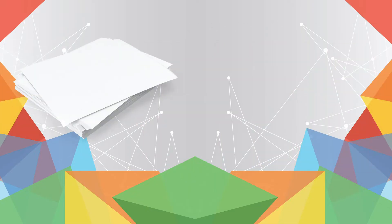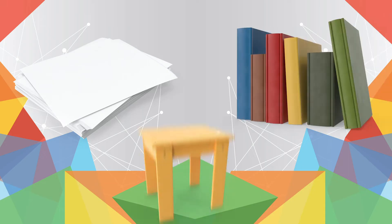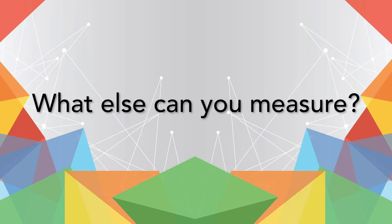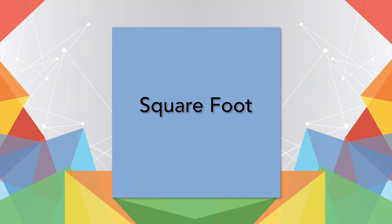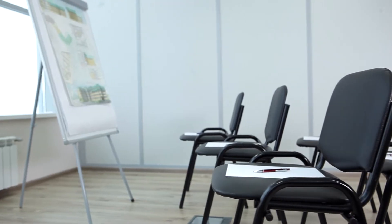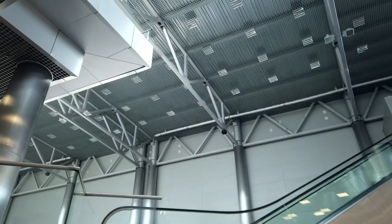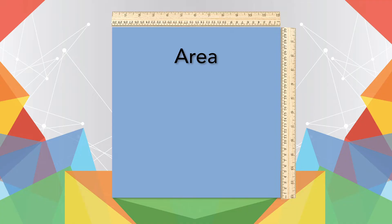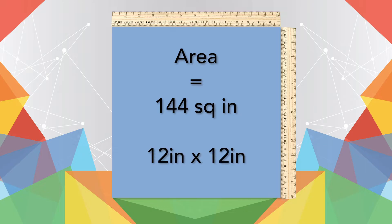Square inches are used to measure the area of things like pieces of paper, books, small tables, and other small surfaces. This is a square foot. A square foot has equal lengths of one foot, or 12 inches. Square feet are used to measure the area of larger spaces like rooms, insides of buildings, or backyards. The area of one square foot equals 144 square inches — 12 inches times 12 inches.